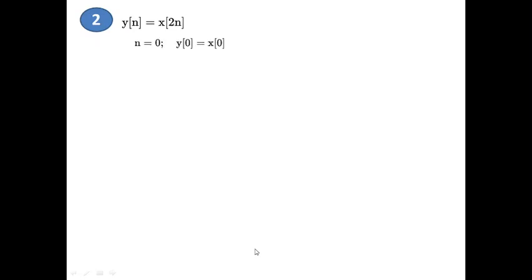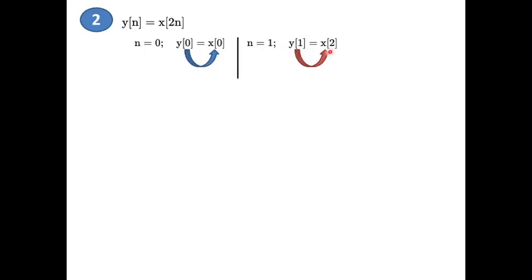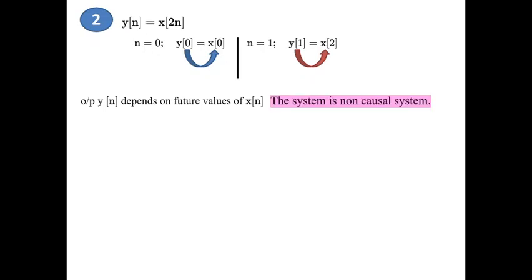For n = 0: y(0) = x(0), so output at current time depends on current input. For positive value n = 1: y(1) = x(2). Since 2 is future compared with 1, that means output at time 1 is dependent on future values of the input. Hence, the system is said to be non-causal. Even in one case, if the output is dependent on the future, you can classify it as a non-causal system.